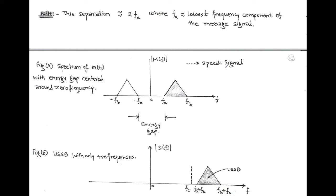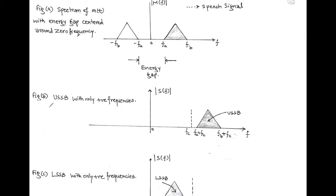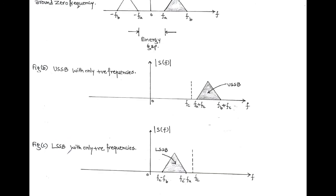To discuss in detail, we consider a speech signal. The speech signal is a type of message signal, and its spectrum has an energy gap centered around zero frequency. Figure A is the spectrum of a speech signal showing a separation between the two sidebands. The lowest frequency component of the message signal is F_A, and the energy gap is approximately equal to twice of F_A. The positive sideband is represented by the shaded area. After modulation and passing through a bandpass filter, we can obtain either upper single sideband or lower single sideband depending on our requirement.